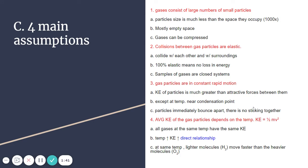These are the four main assumptions that your book really talks about. Gases consist of large number of particles, and those particles are extremely small. That's true. If they were bigger, they would be moving slower.